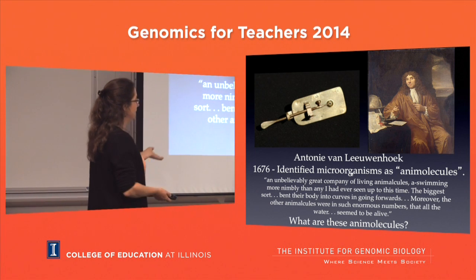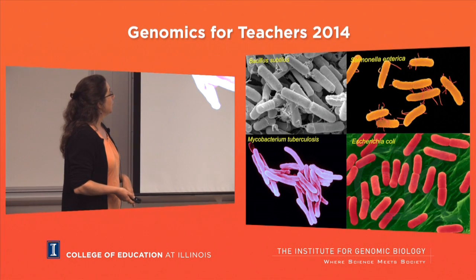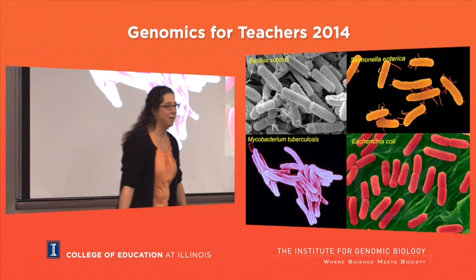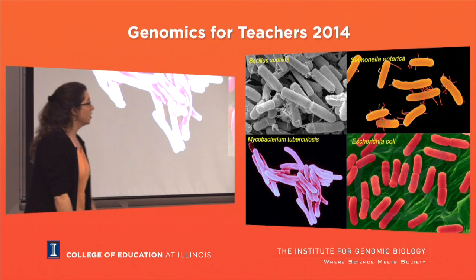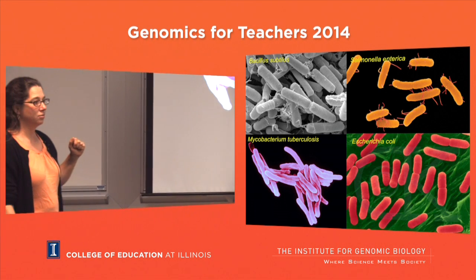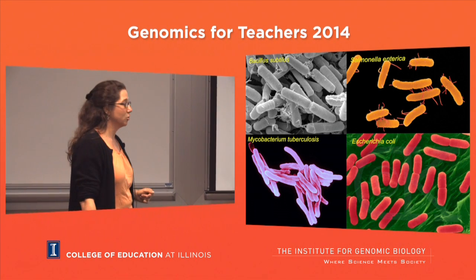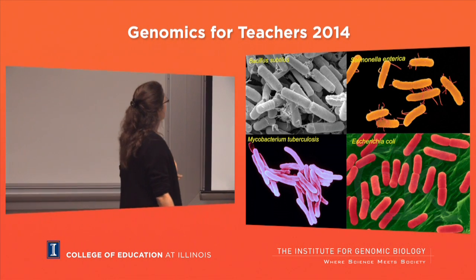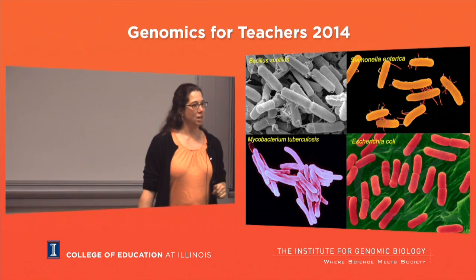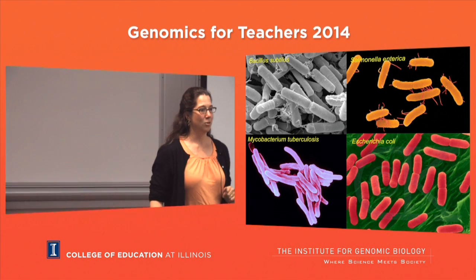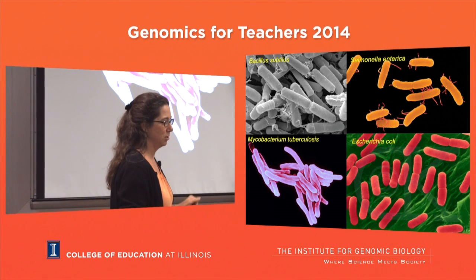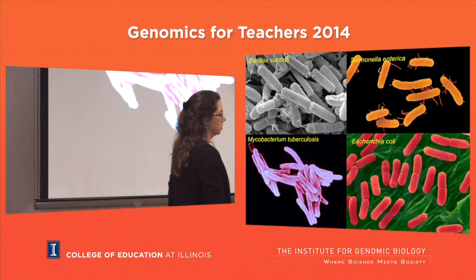So what are these 'animal molecules'? Fast-forwarding to today, we have electron microscope images. If you looked in a very fancy electron microscope you might see these different microorganisms. I ask you: can you tell who they are, or even who's most closely related to each other based on these pictures?